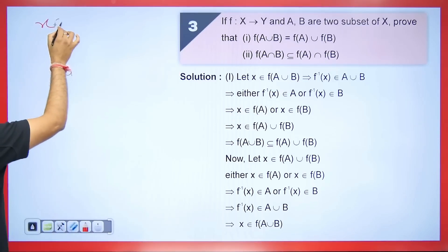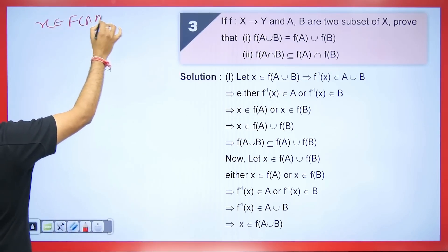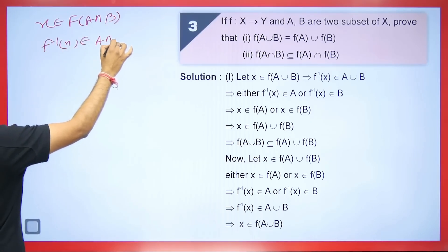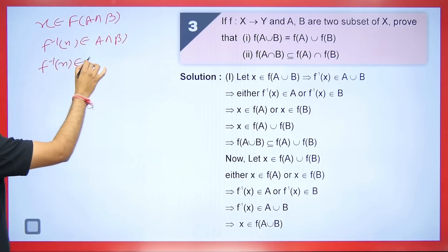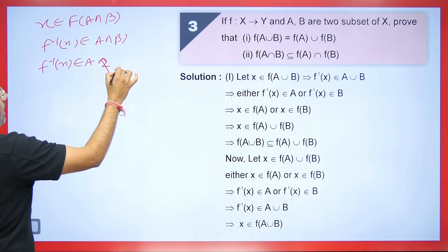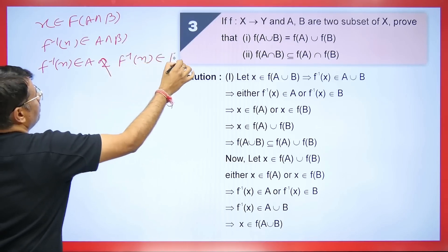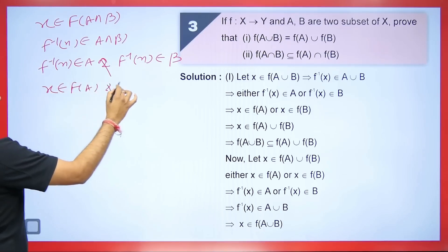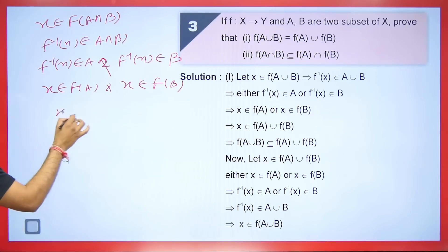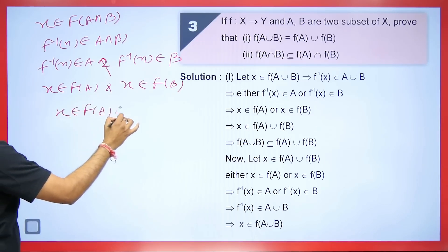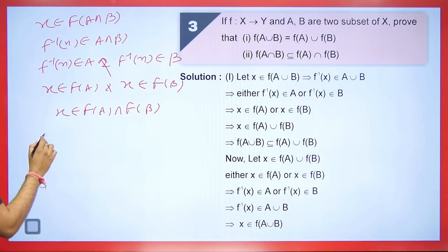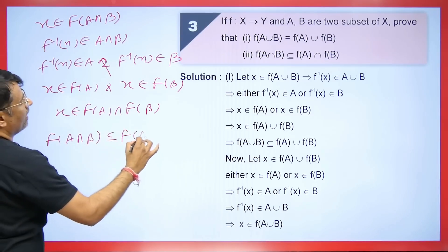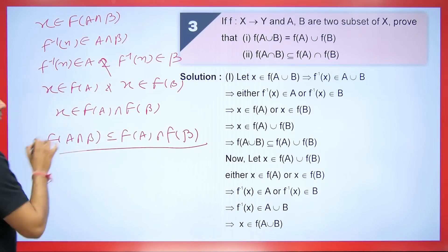Now the second part: prove F(A ∩ B) ⊆ F(A) ∩ F(B). Assume x ∈ F(A ∩ B), so F⁻¹(x) ∈ A ∩ B. This means F⁻¹(x) ∈ A and F⁻¹(x) ∈ B. Therefore x ∈ F(A) and x ∈ F(B), which means x ∈ F(A) ∩ F(B). We have proved F(A ∩ B) ⊆ F(A) ∩ F(B).